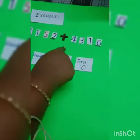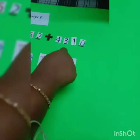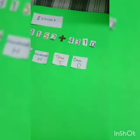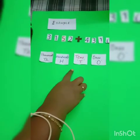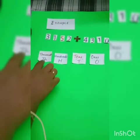3152 and 4310. Write the numbers in place value chart. That is in the ones, tens, hundreds and thousands columns.